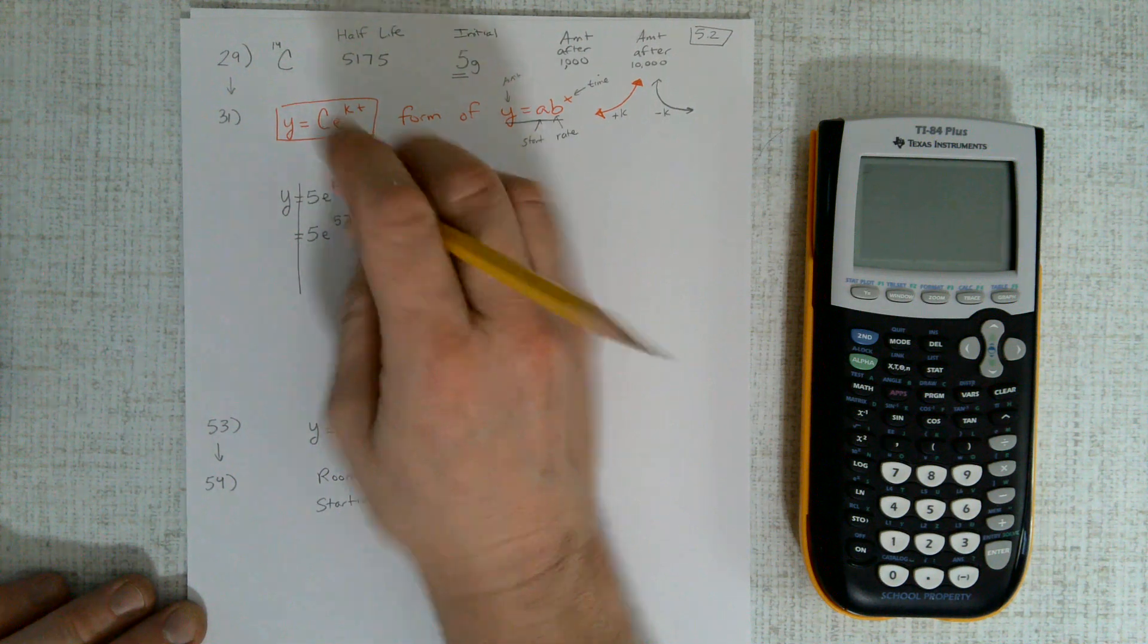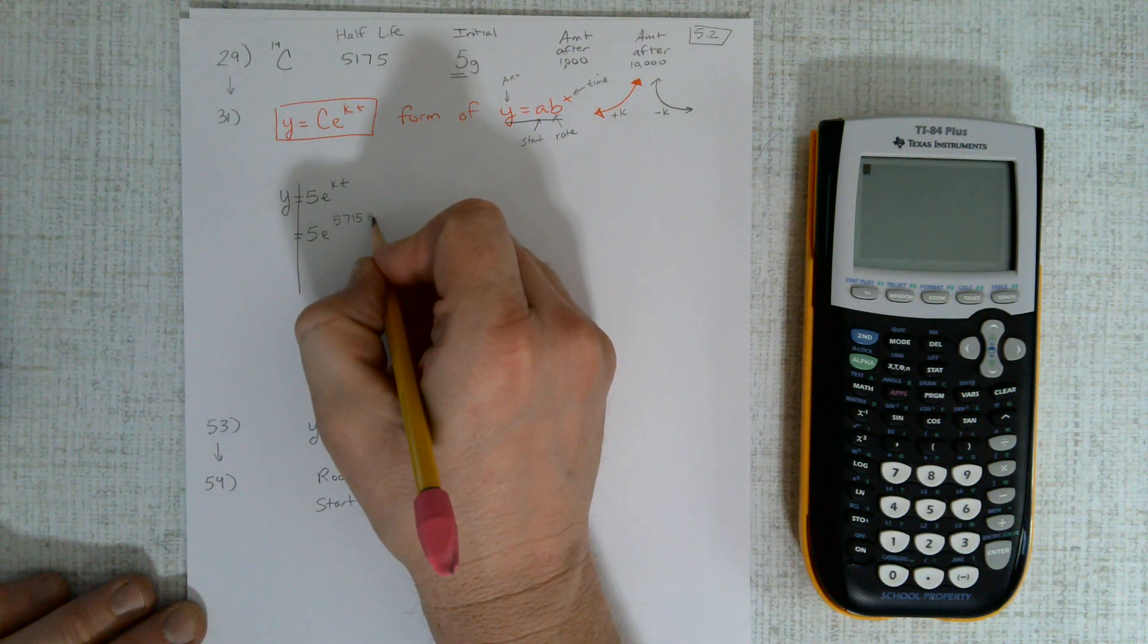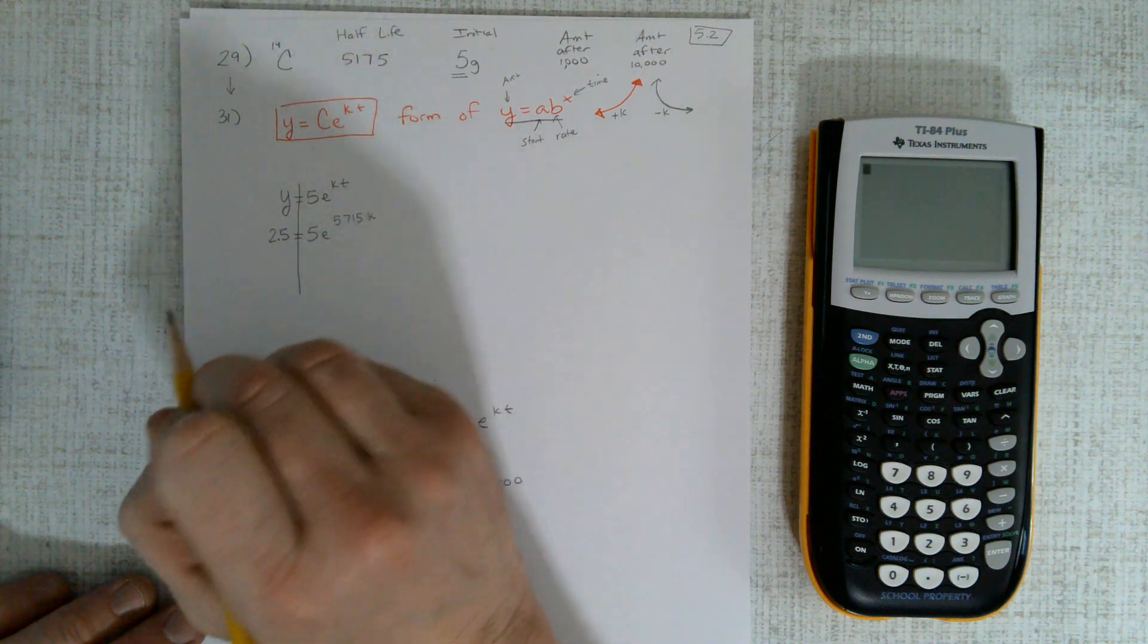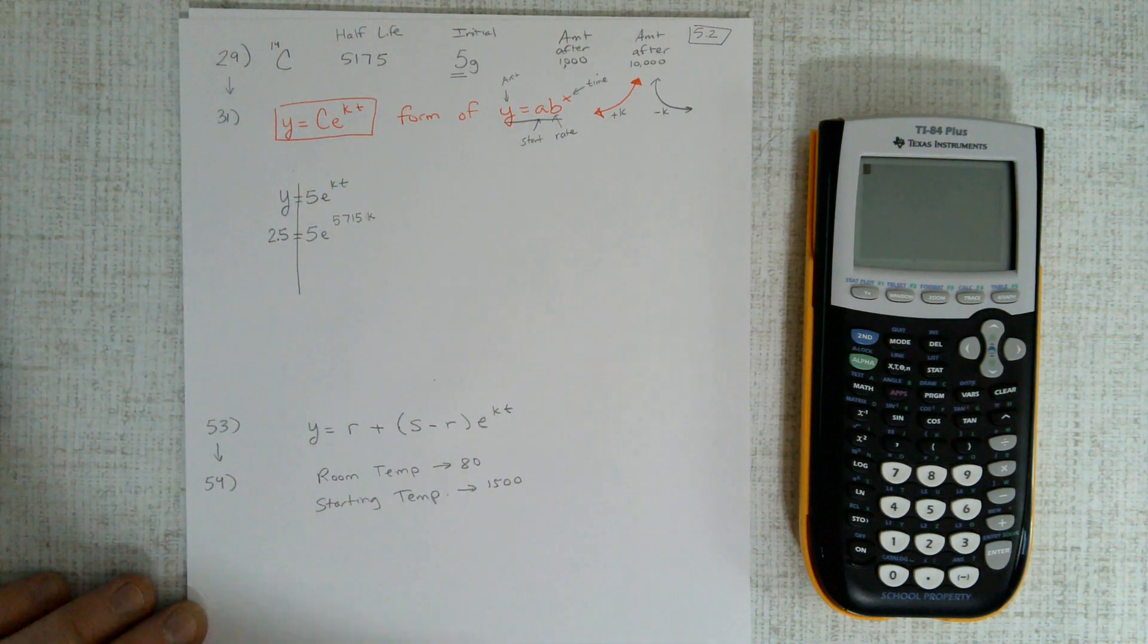after this many years with that k value, it's going to be dropped down to 2.5. So that's the point I'm going to substitute in.